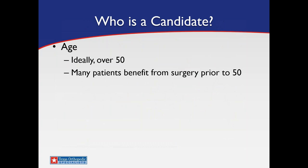So who's a candidate? First, I look at age. Ideally the patient will be over 50, but many patients benefit from surgery prior to age 50 — typically those with disease processes like avascular necrosis from HIV treatment, cancer, high-dose steroids, alcohol or drug abuse, trauma, or infection. Patients with dysplasia can benefit from reconstructive surgery, but if we miss that window — usually teens to mid-20s — we're looking at total hip replacement in much younger patients.